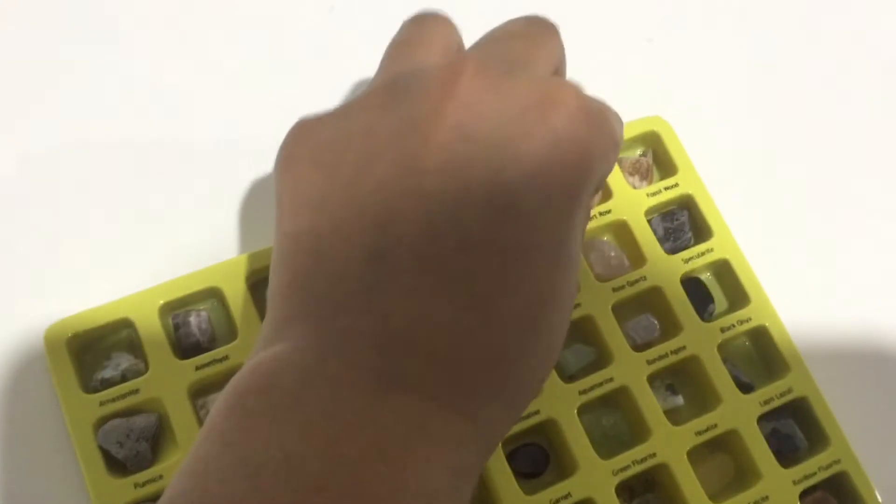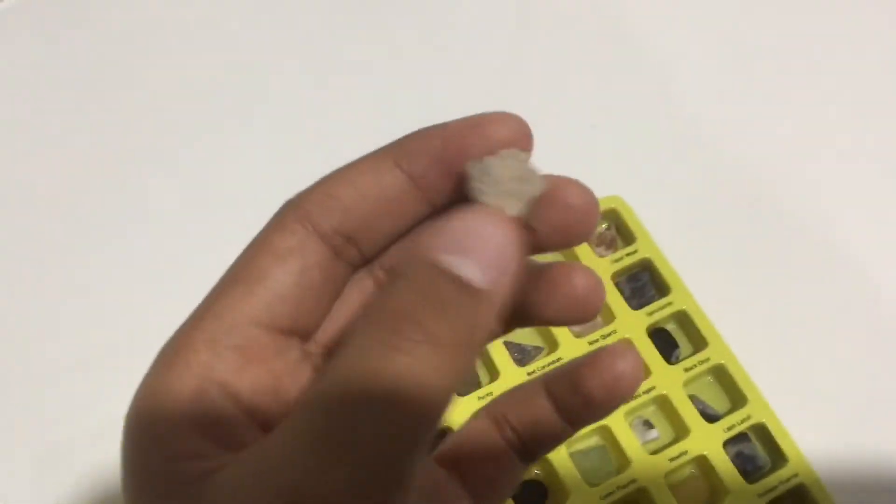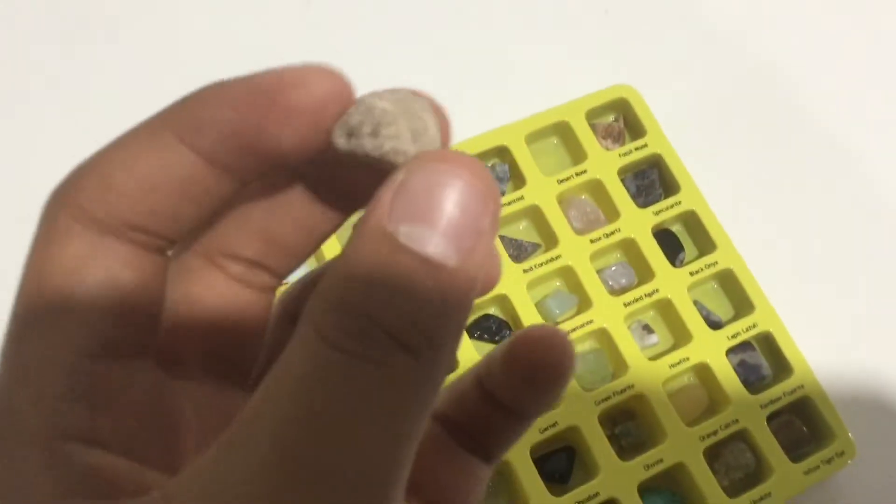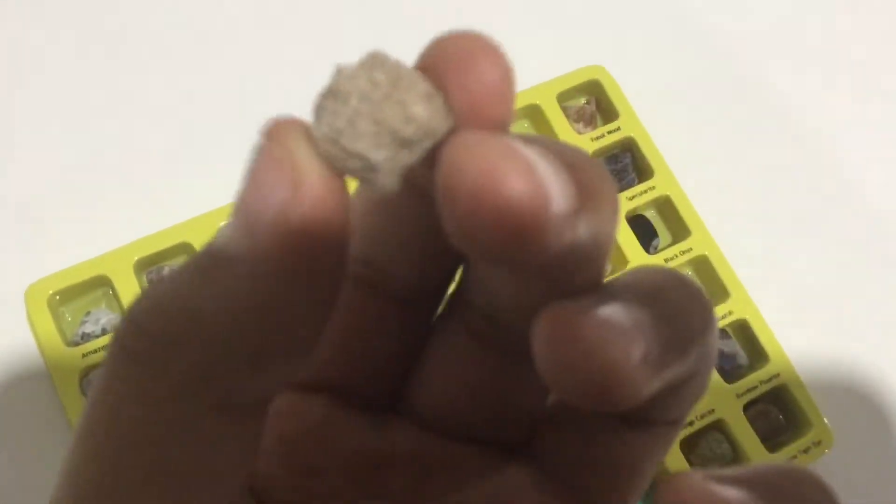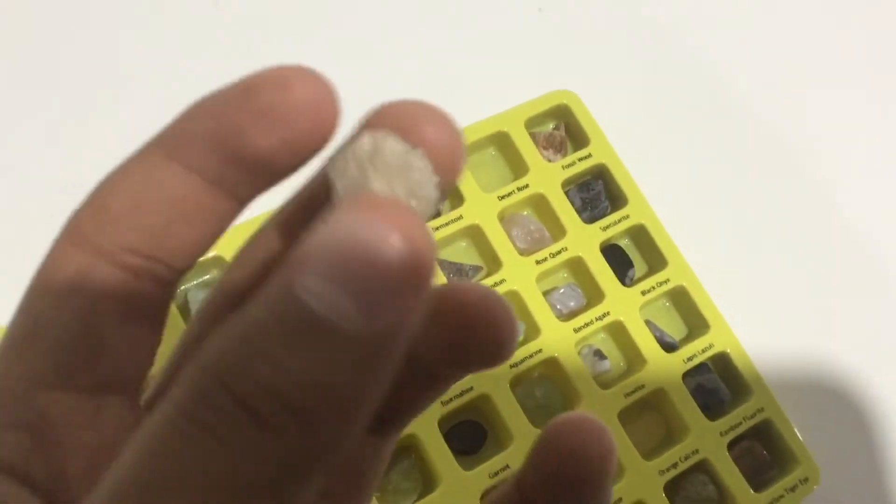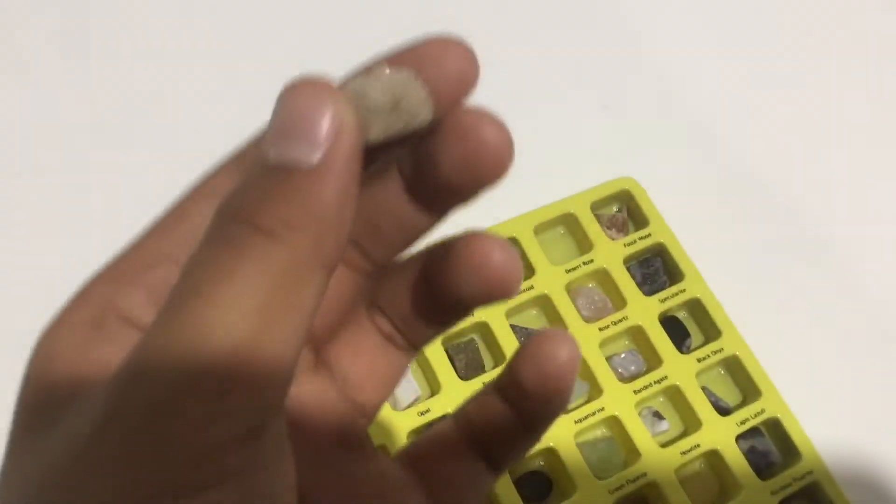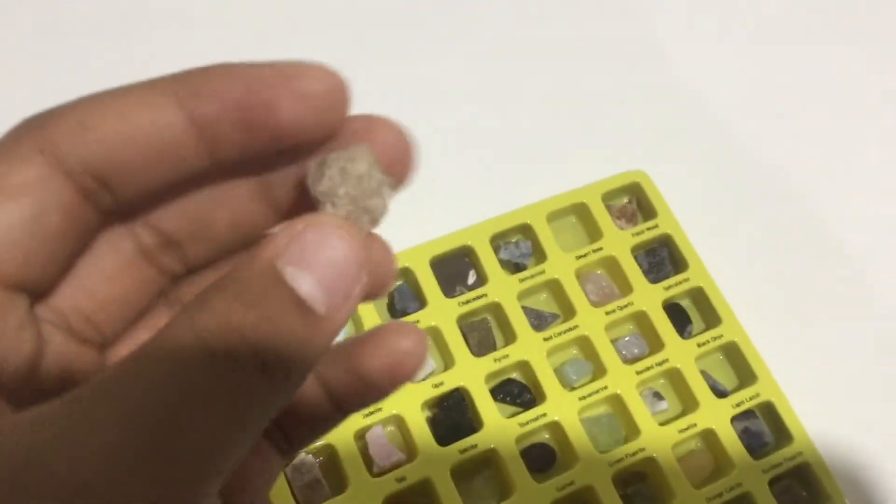This one is a desert rose. I'm at school doing a thing about biomes and I'm doing the desert biome, so this comes from it. It's like a bunch of sand together, but it's not that fragile. Sometimes some sand comes off, but not all the time.